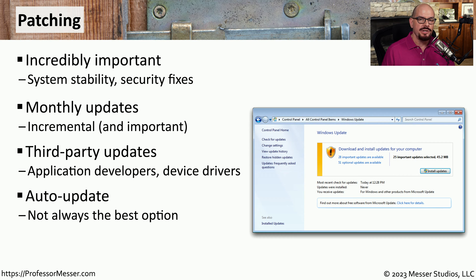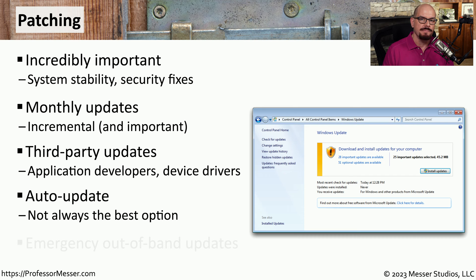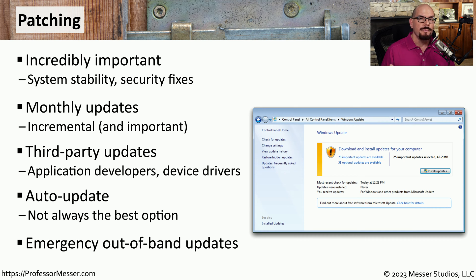In a large organization, however, this might not be an automated process. Instead, the information technology department may test the patches first, and only once they know that they're working properly do they push them out to everybody else's system. And although some of these patches arrive on regular intervals, there may be times when an emergency patch is pushed out, especially if it's a significant vulnerability and the attackers are actively taking advantage of this unpatched opening.